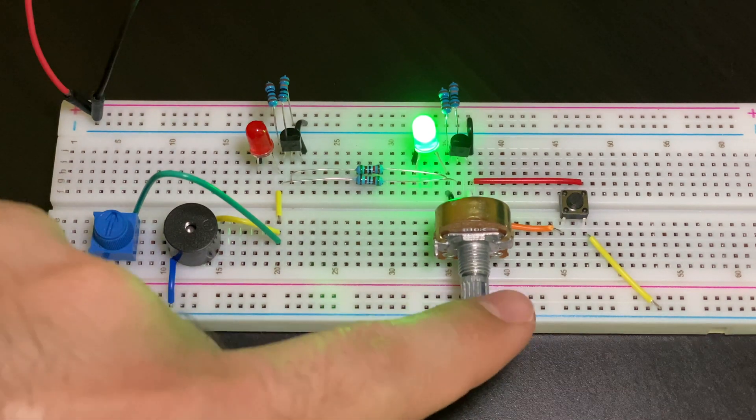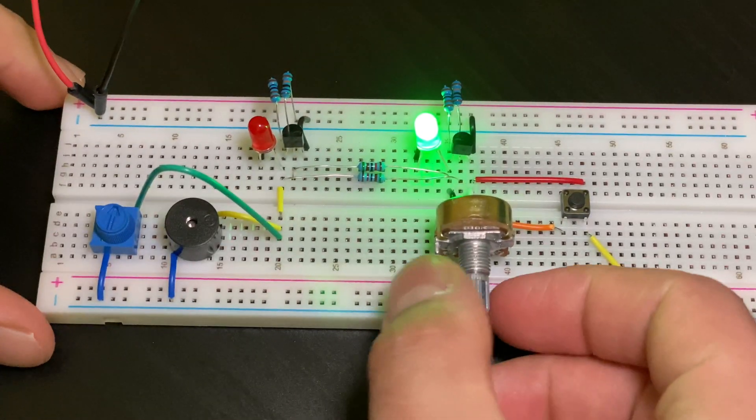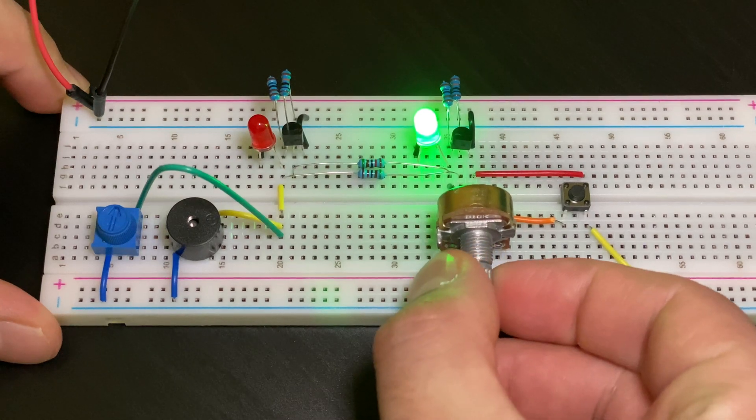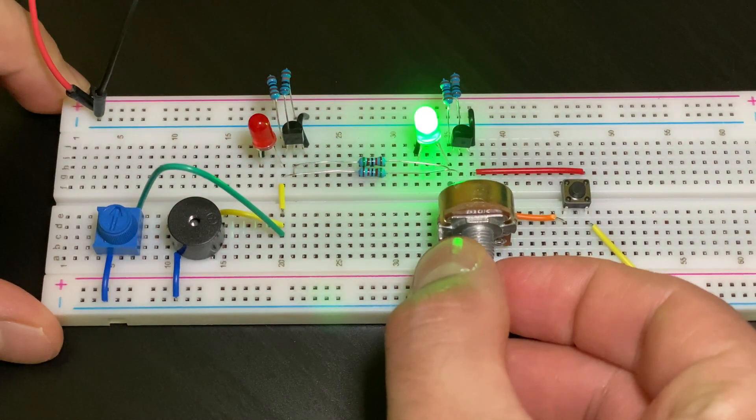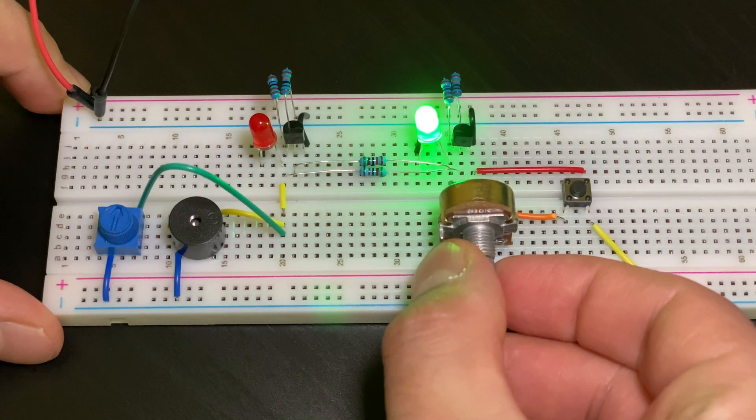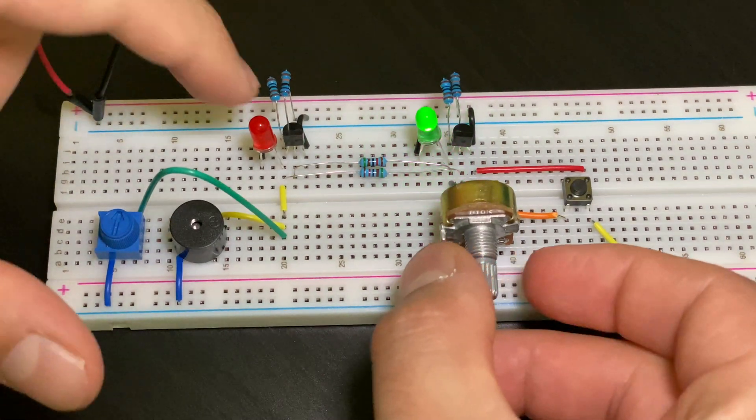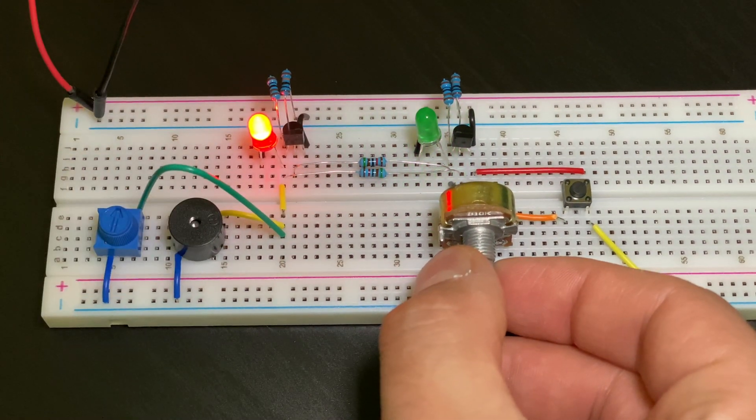You can also see that we have another potentiometer. This is for the green LED. So when I go ahead to turn it, I can slowly dim the green LED and turn on the red one which creates the beeping noise.